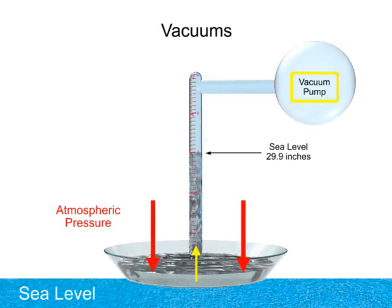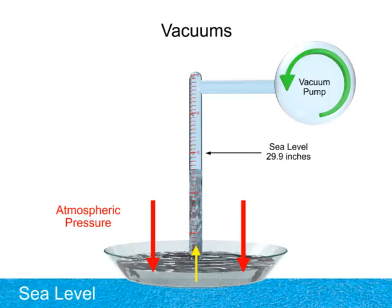If a vacuum pump is connected to the top of the mercury column and allowed to run, the mercury column would not rise as high as with a sealed barometer. This is because no vacuum pump can achieve a perfect vacuum. Vacuum pumps are given their rating based on how high they can pull the level of mercury upward towards a perfect vacuum.